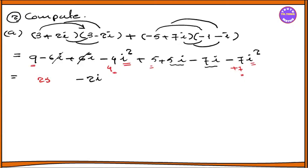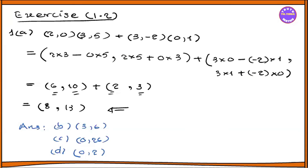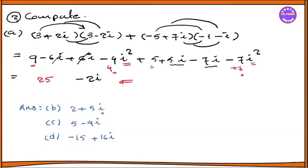In this situation we have to find out: number 1 — C is 0.26, D is 0.2. Number 2 — B is 2 plus 5i, C is 5 minus 4i, D is minus 15 plus 16i. Now I hope you will see the next video. Thank you very much.